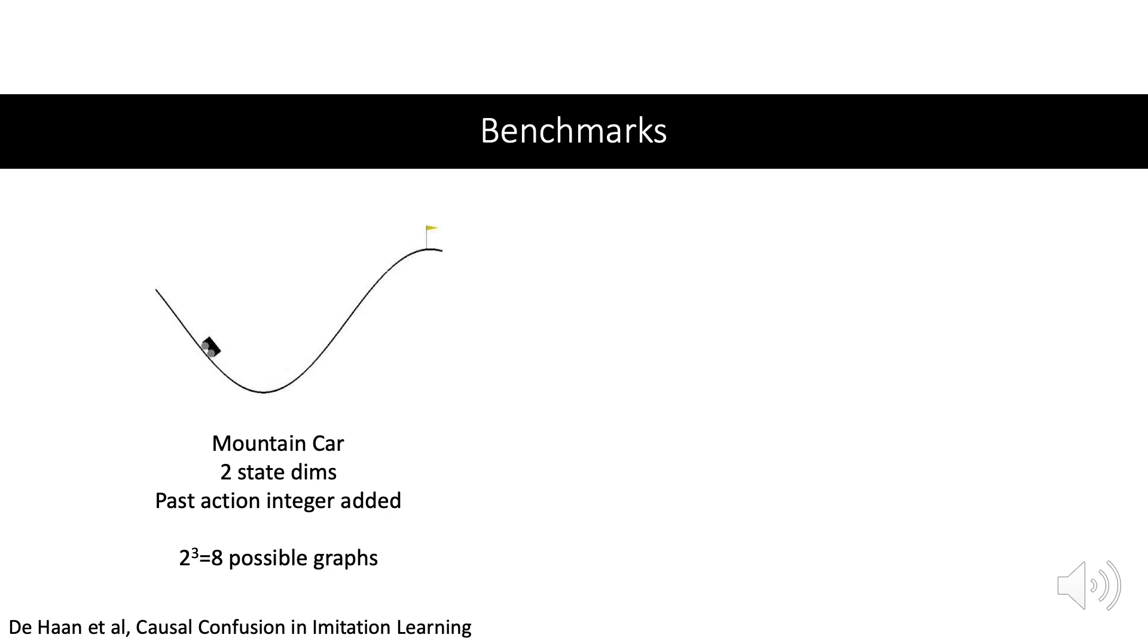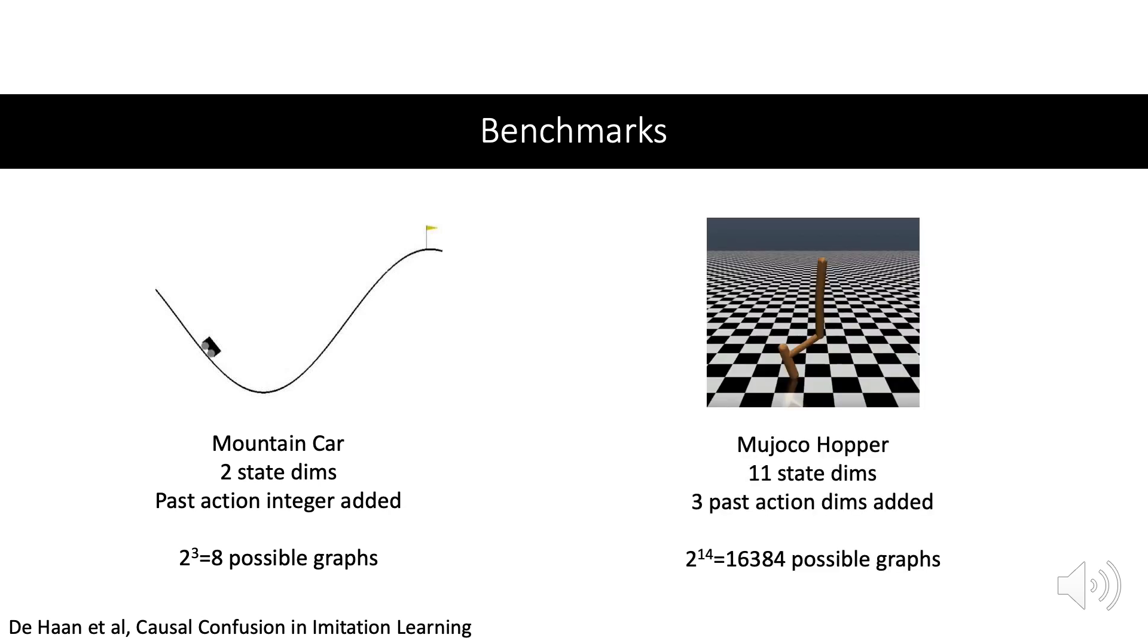We have mountain car, which has a 2-dimensional state, and to which we concatenate the integer representing the past action. Thus we have 3 state dimensions, and 2 to the 3 is 8 possible causal graphs.